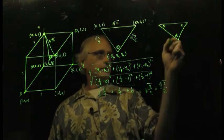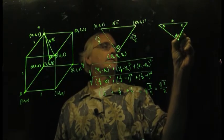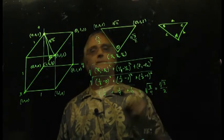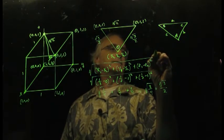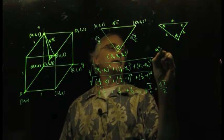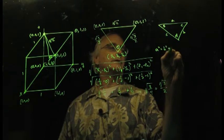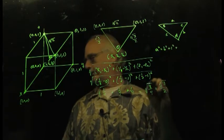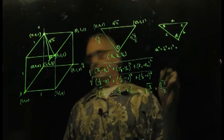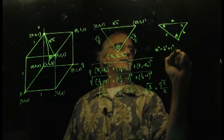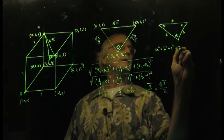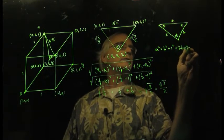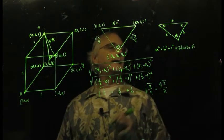They label the angles, capital A, B, C, and the corresponding side, small case a, b, c. And then the Law of Cosines says, here's just the equation: a² = b² + c² - 2bc cosine of angle A.